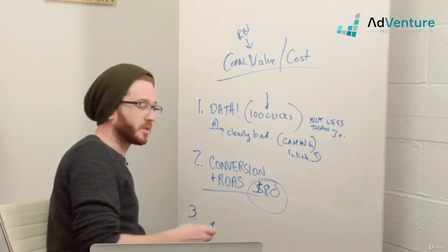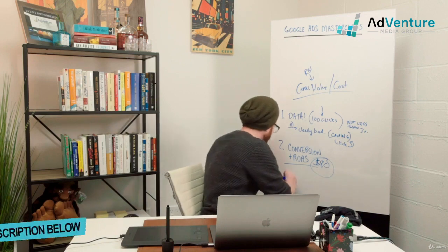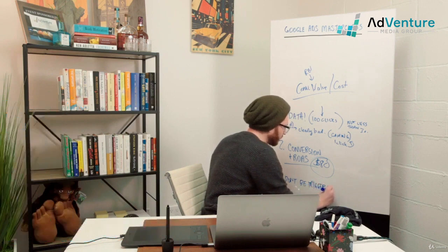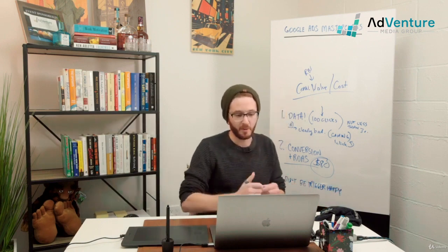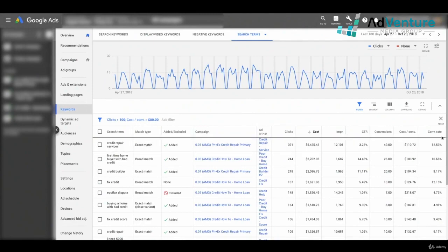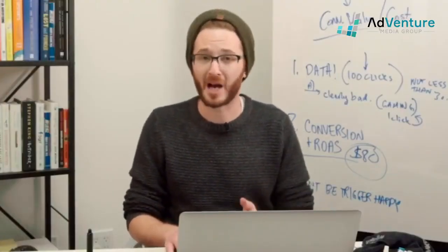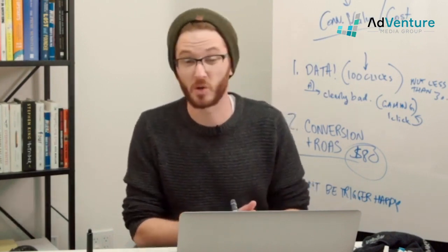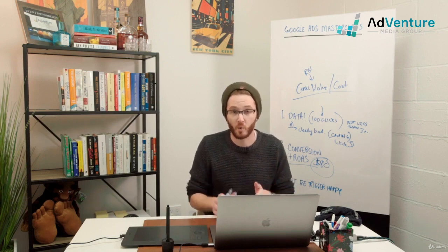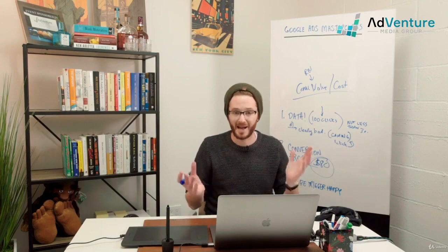The third concept is: make sure that anything you can do to make a keyword better, you try before knocking it out. Don't be trigger happy adding negative keywords just because something looks bad. 'Credit repair services' at $110 isn't profitable right now, but it's clearly a good search term — we just need to make it more profitable, perhaps by improving quality score from a six to a nine, lowering CPC, and therefore lowering cost per conversion. 'Equifax dispute,' on the other hand, is clearly no good — we knock it out and add it as a negative.